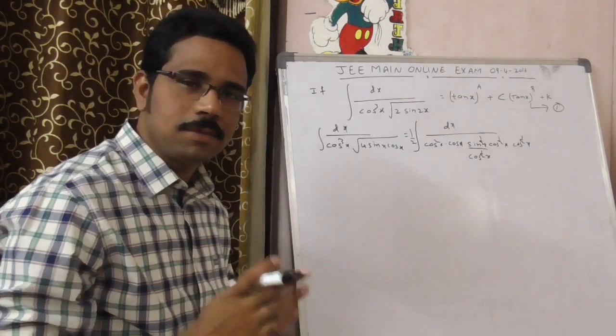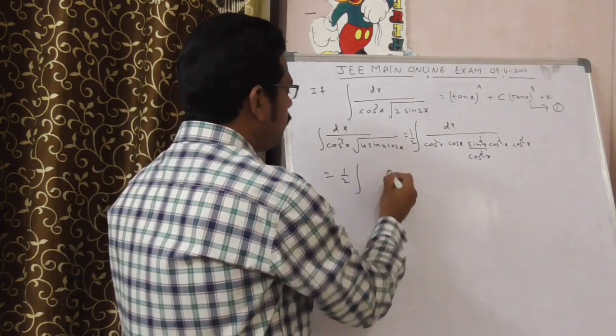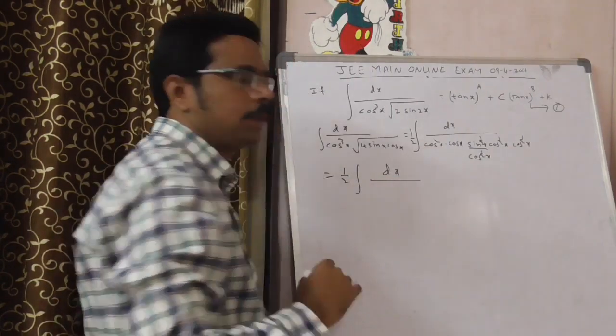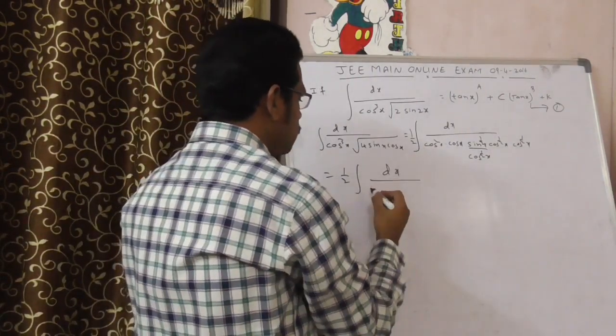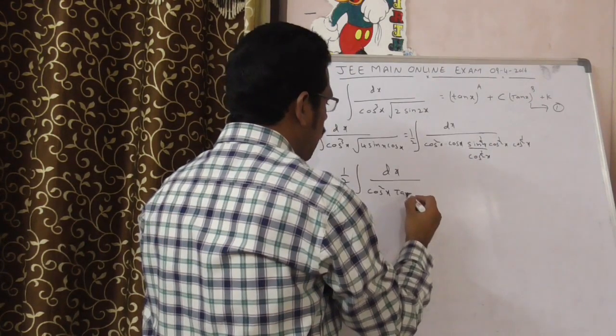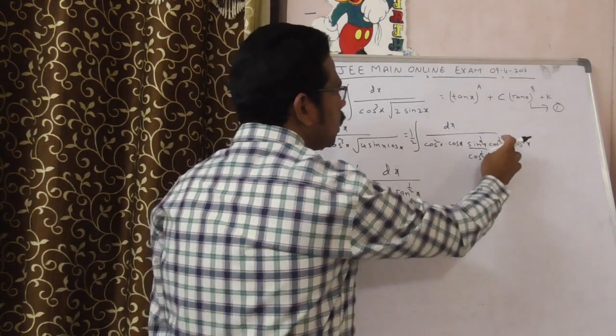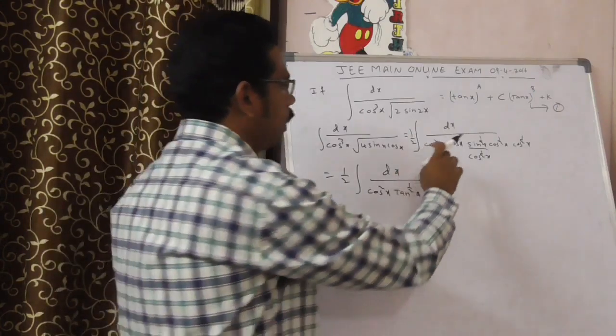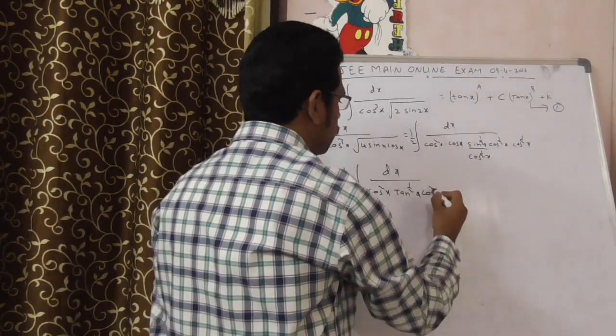Understand the magic? Very good. This is equal to 1 by 2 integral dx by, now it is cos square x. Sine by cos is tan, that is tan power 1 by 2 x, cos power 1 by 2 into cos. Again, cos into cos, that is cos square x.